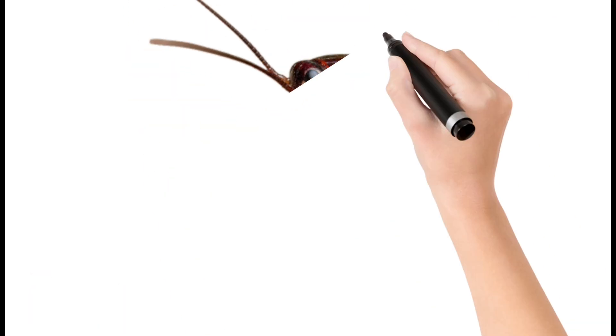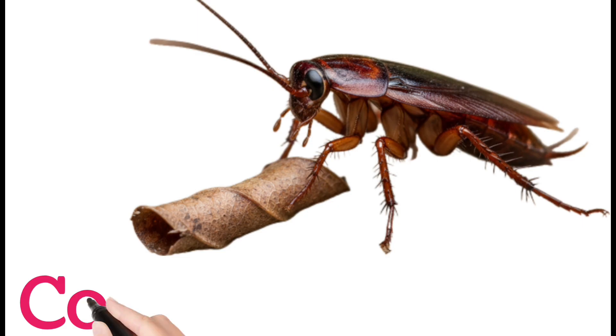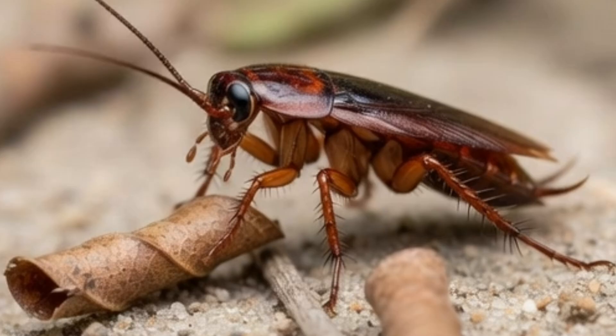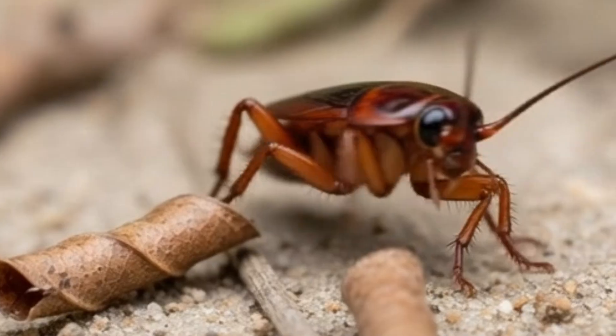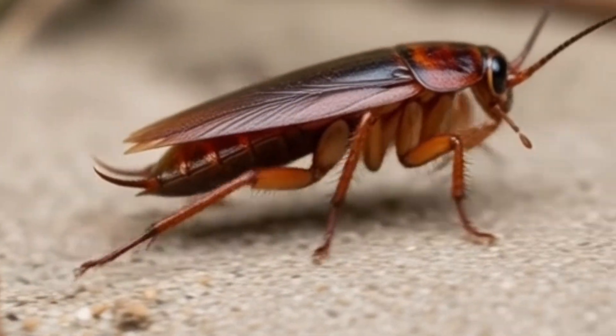Cockroach. A cockroach is a fast-moving insect found in dark places. It can survive in harsh conditions. Cockroaches feed on almost anything.